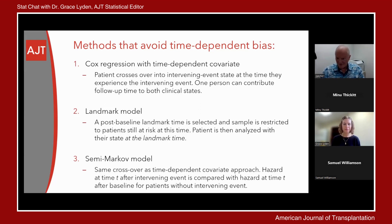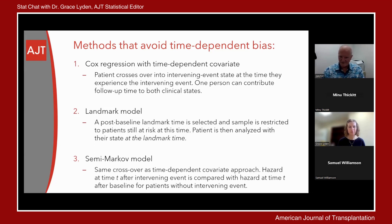The landmark method is somewhat different — it's a simpler approach. A landmark time is chosen subjectively; in intestinal transplant, we chose one month and three months post-transplant. At the landmark time, we consider only patients still at risk for graft loss, and classify them by whether they have had a rejection up to that time point or not — creating two clearly defined groups to compare for graft survival following that landmark time. The problem with the landmark method is you lose certain information and don't include it in the analysis, so statistical power can be less compared to the other two methods.